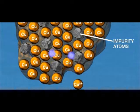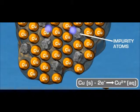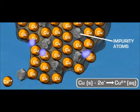Each copper atom loses two electrons to form copper ions. The loss of electrons is oxidation.